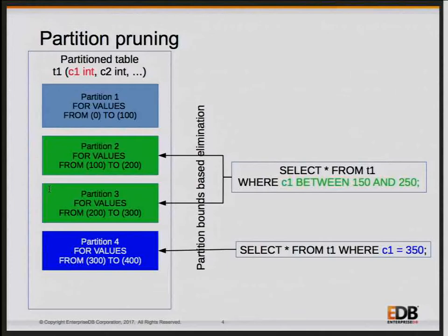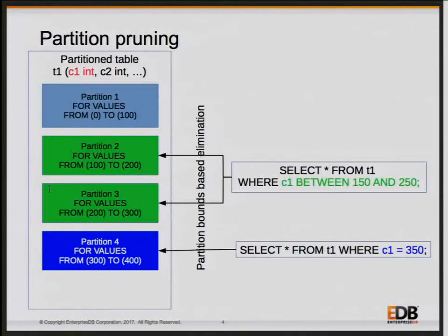Proofs are expensive using expressions. With bounds you can essentially do a binary search for the first and last partitions that could have data. Constraint exclusion has to visit each partition to check for a contrary constraint, but with bounds you can arrange them in order and do a binary search: take 150, do a binary search, take 250, do a binary search, and find the overlap. Planning time reduces almost 50%. Right now it increases linearly with number of partitions because we open all partitions and create relation caches, but that can improve further.